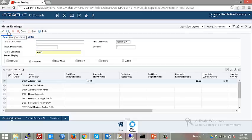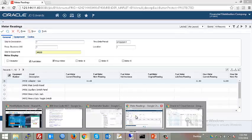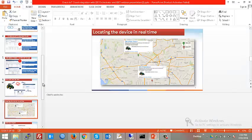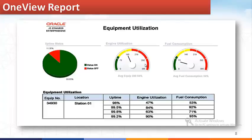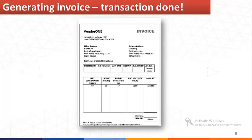Moving on to the JDE Enterprise One application — here we can see the equipment information collected from the JDE IoT Orchestrator, including equipment number and related parameters. We also generate equipment utilization reports through OneView. You can see the OneView report here: we have gauges, tables, and location values. The equipment utilization report contains engine utilization and fuel consumption data. Finally, based on the equipment utilization, we generate invoices through JDE.